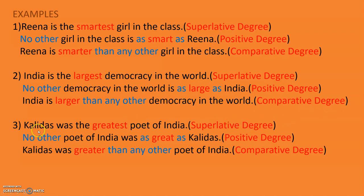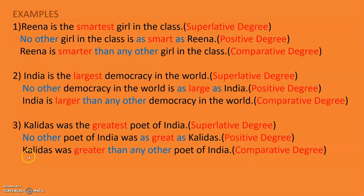Let us take another example. If I say: Kalidas was the greatest poet of India. Which degree is it? It is EST — superlative degree. To change it into positive: no other poet of India was as great as Kalidas. Note it is 'was' because Kalidas is a historical person. 'As great as' — great is the positive form, with 'as' on both sides. Comparative: Kalidas was greater — ER — than any other poet of India. That is comparative degree.